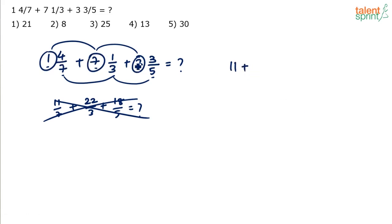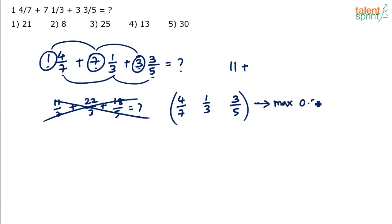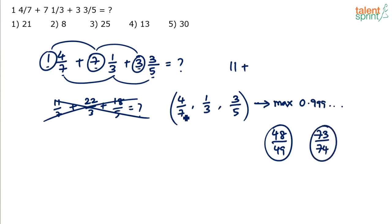Even if we consider all three fractions — 4/7, 1/3, and 3/5 — equal to 1, the maximum sum of the fractions would be 3. The maximum value any proper fraction can take is just under 1. So the total answer is at most 11 plus 3, which is 14. The answer must be between 11 and 14.